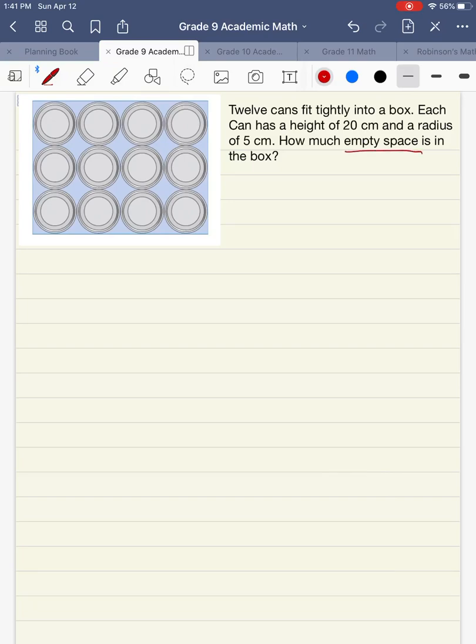When we're looking for empty space, this means we are looking for volume. Let's take a look at the question and see how we can take the measurements from the question and then add them to our diagram. The cans have a height of 20 centimeters and we're told that the cans fit tightly into this box. So this means that the box also has a height of 20 centimeters.